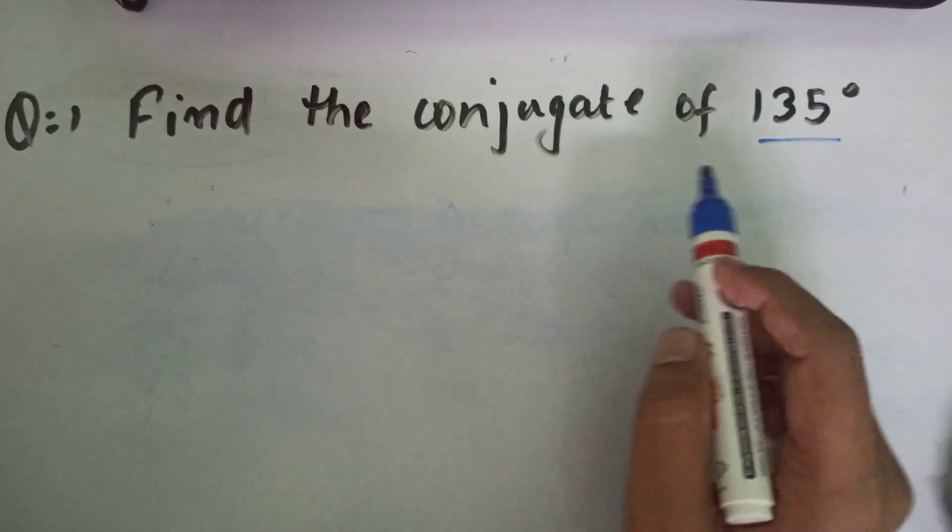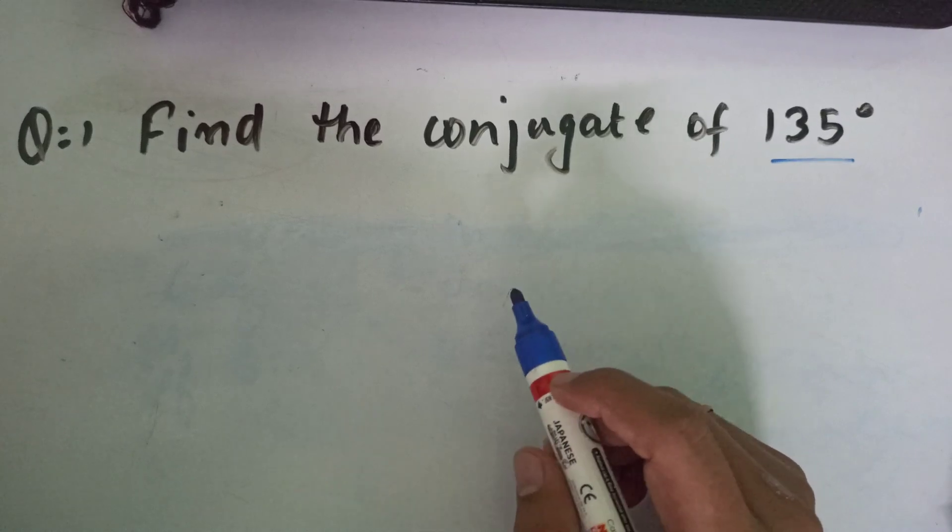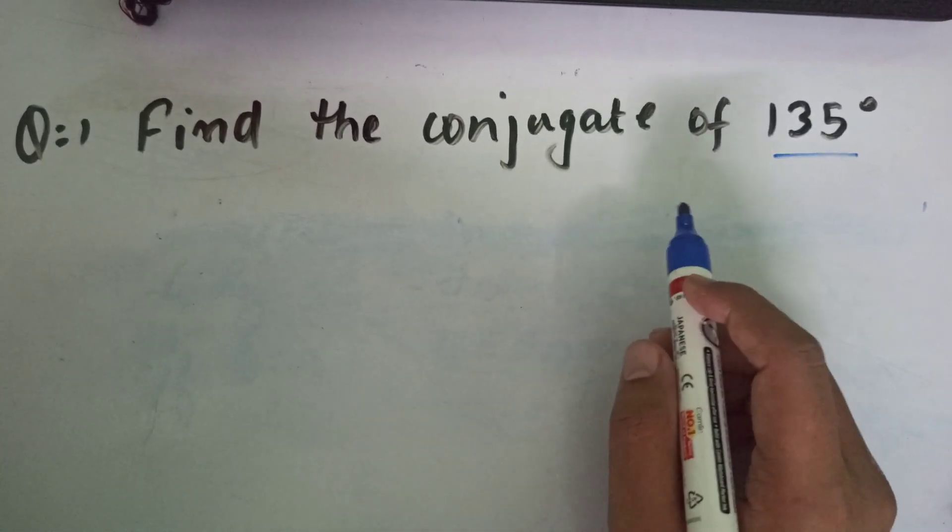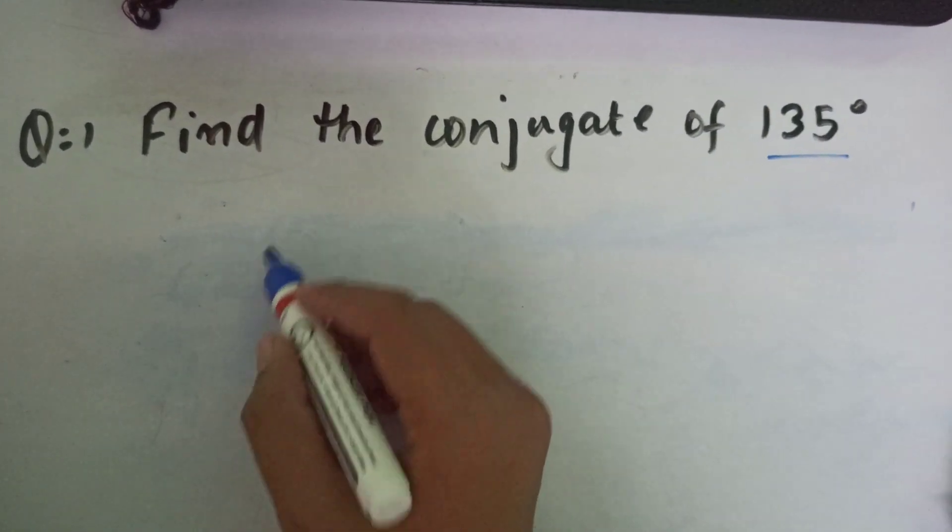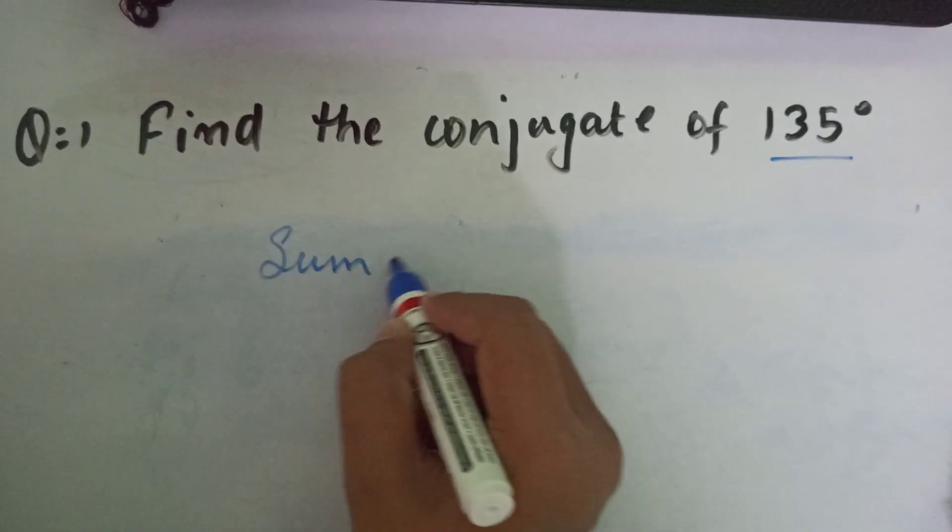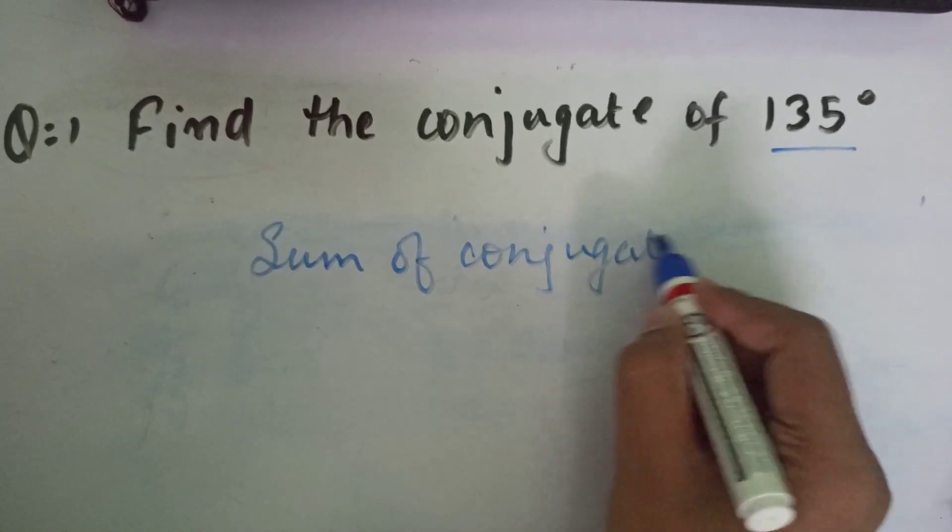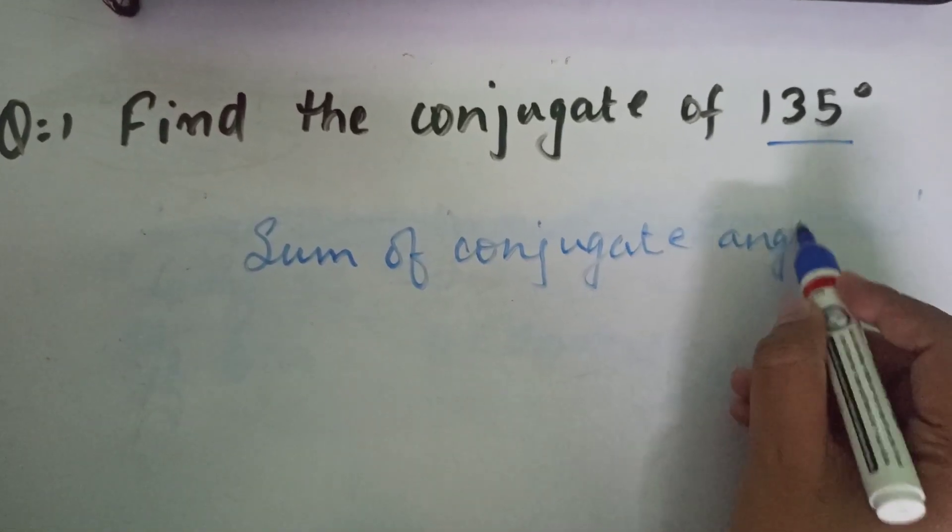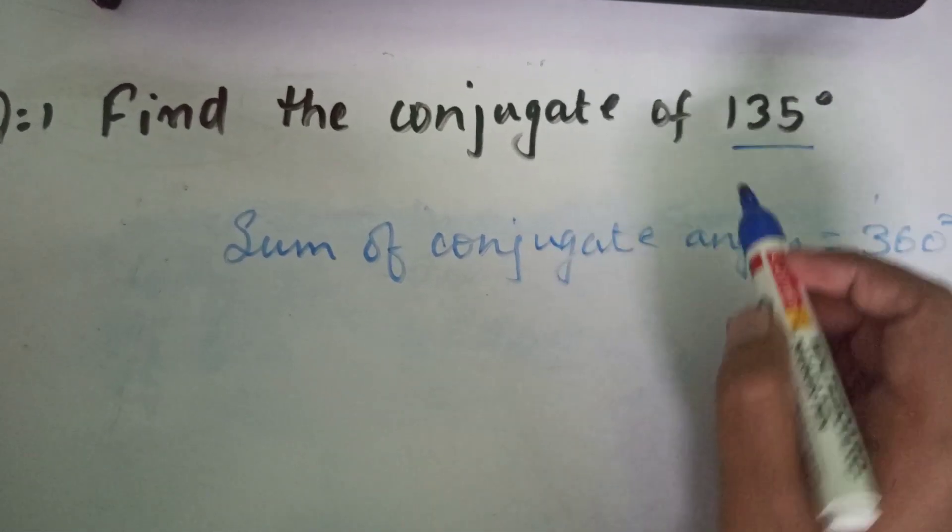So guys, today's question is how to find the conjugate of 135 degree angle. Before finding the conjugate of 135, we should know what is conjugate. Basically, the sum of conjugate angles is 360 degrees.